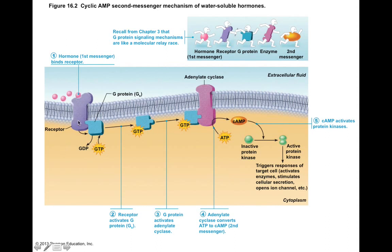Once this amino acid-based hormone binds to its respective receptor, that can activate something called a G protein. G proteins are activated once you get a molecule called GTP, which binds in response to the hormone binding to the receptor. Once GTP binds to the G protein, this G protein separates from the receptor and travels along the inner surface of the plasma membrane until it reaches another plasma membrane protein, which is an enzyme called adenylate cyclase. Once this activated G protein associates with adenylate cyclase, this enzyme converts ATP into cyclic AMP.